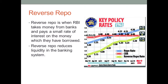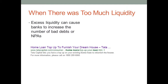Reverse repo is when RBI takes money from banks and pays a small rate of interest on the money which they have borrowed. In this situation, the money in the banking system decreases. This is done because too much money available can lead to inflation and a greater amount of loans given out by the banks. In fact, there have been situations where banks have not only given home loans, but cash for furnishing the home as well — all this happens when there is too much money in the banking system.